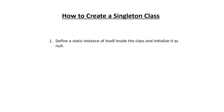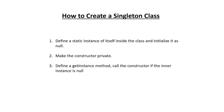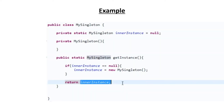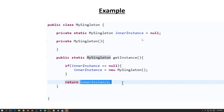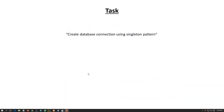How to create a singleton class: first, define a static instance of itself inside the class and initialize it as null. Second, make the constructor private. Third, define a getInstance method that calls the constructor if the inner instance is null. Here you can see the example — the inner instance is null, the constructor is private, and there's the getInstance method.